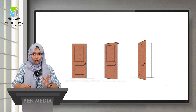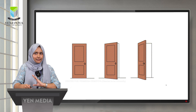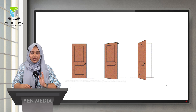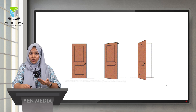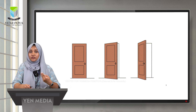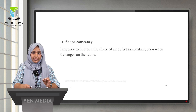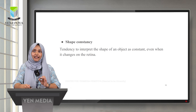As you can see in this example — a door viewed at different angles appears as a rectangle, then slightly trapezoidal — but we know the shape is not changing. Similarly, with a clock viewed from different angles, the perceived shape differs, but we know the shape is constant. This is called shape constancy: the tendency to interpret the shape of an object as constant even when it changes on the retina.